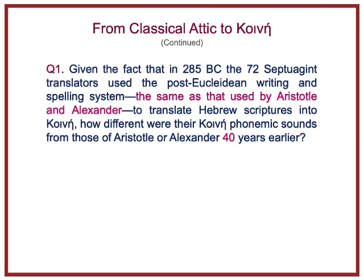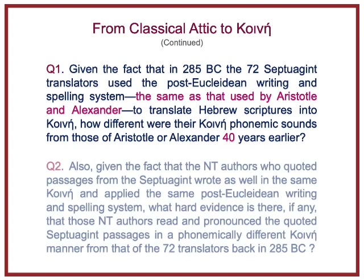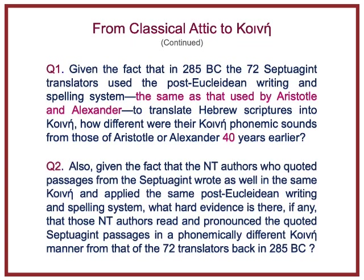We are technically talking about classical Attic versus Kini. Given that New Testament authors quoted passages from the Septuagint and wrote in the same Kini, applying the same post-Euclidean writing and spelling system, what hard evidence is there—if any—that those New Testament authors read and pronounced the quoted Septuagint passages in a phonemically different Kini manner from that of the 72 translators back in 285 BC?